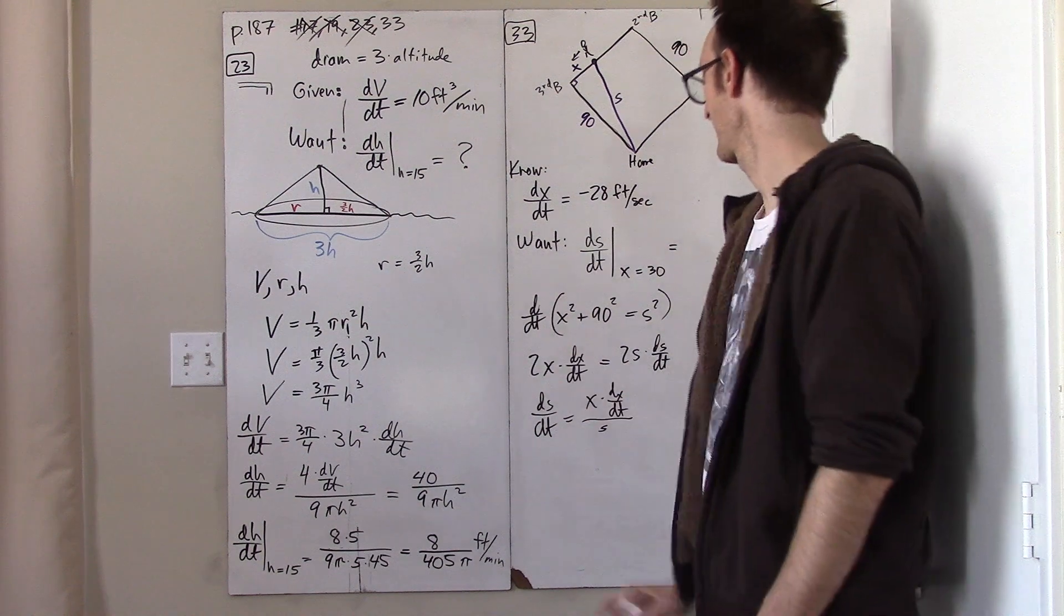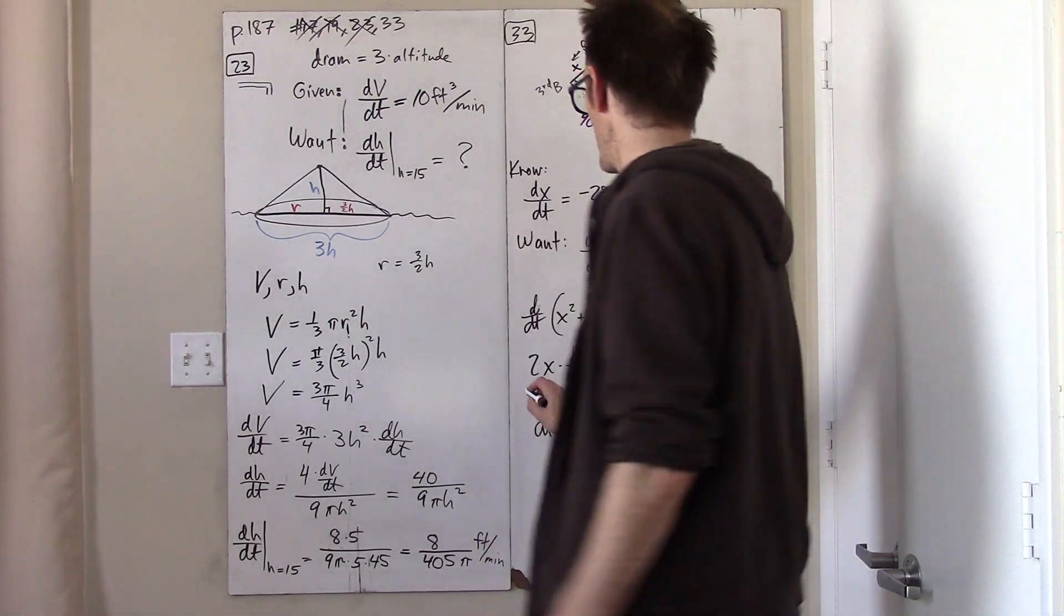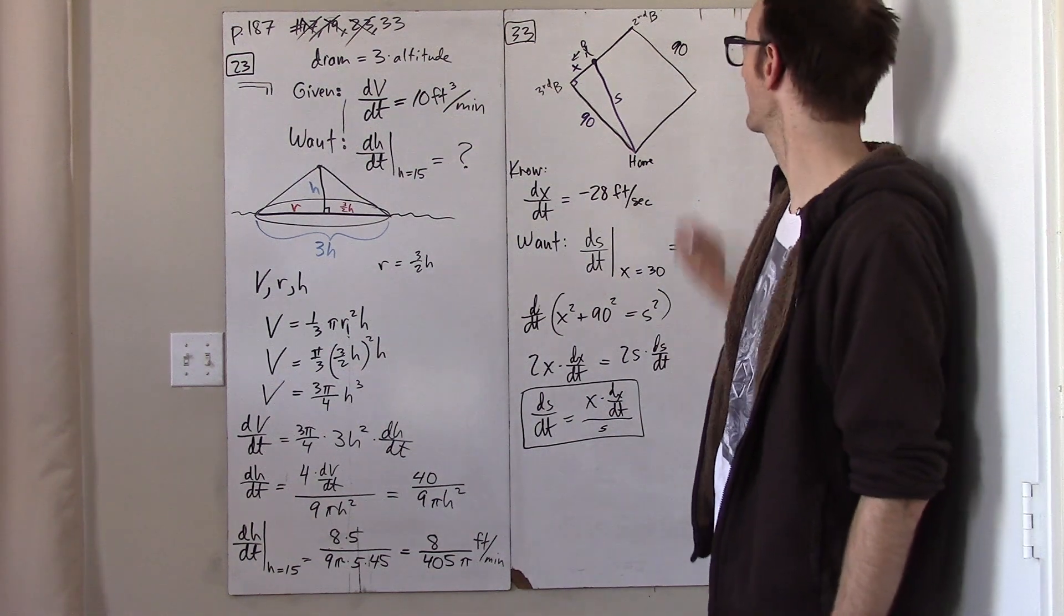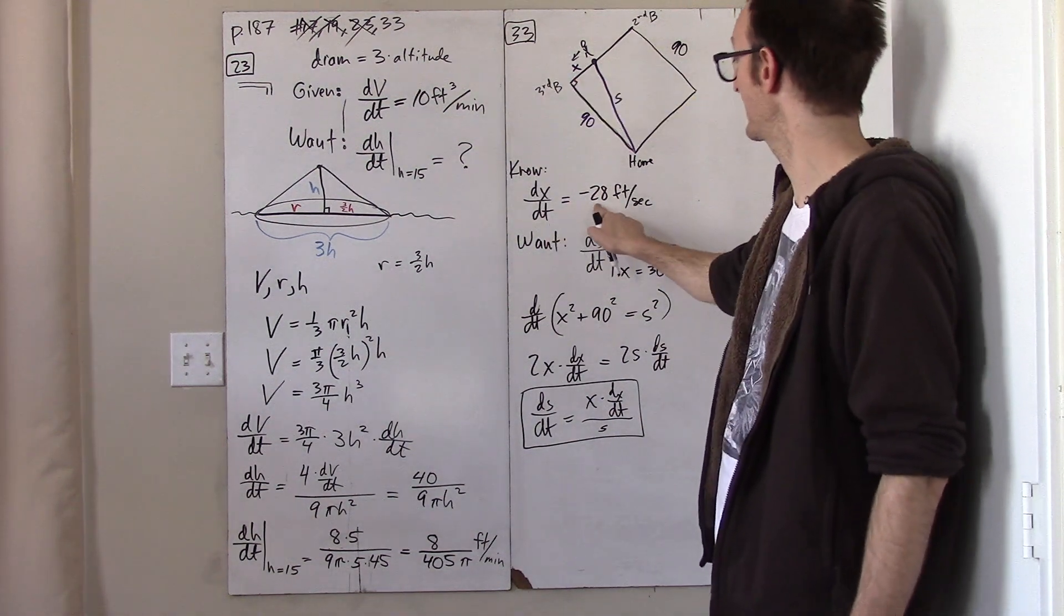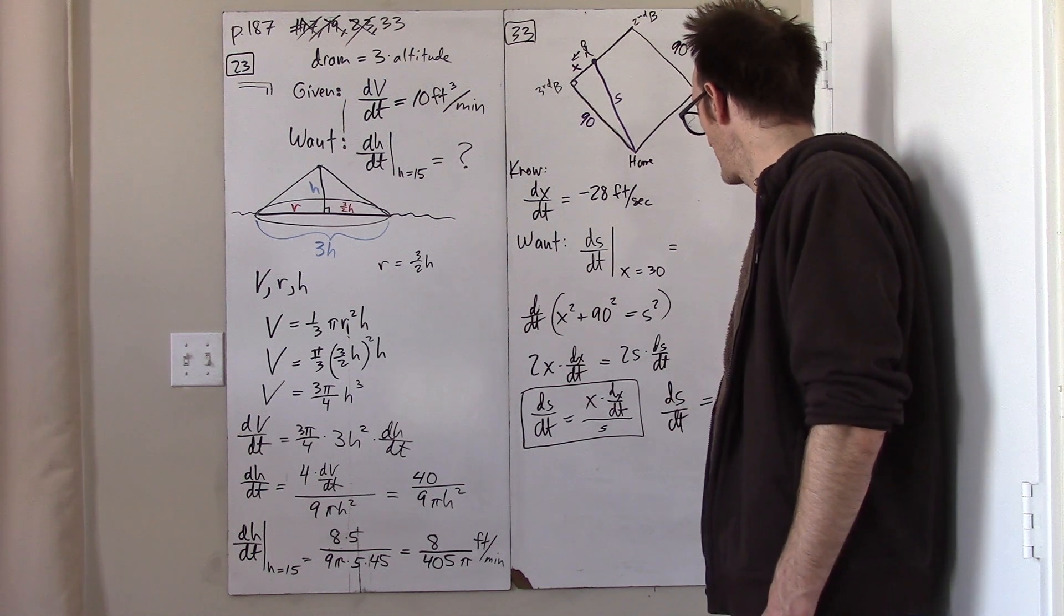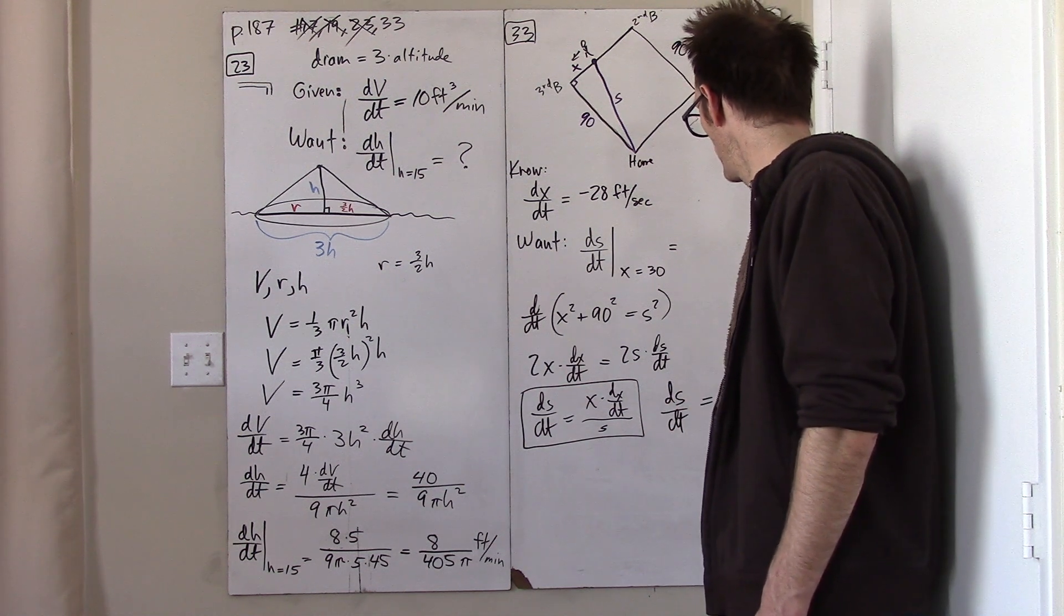And that's the sort of general formula, but the formula that incorporates the fact that dx dt is negative 28 is, of course, negative 28x over s.